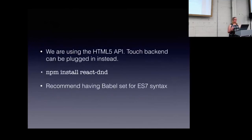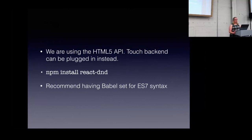For the example we're looking at, we're using the HTML5 API. You can implement a touch backend instead, as the HTML5 backend is for mouse users — it's one or the other unfortunately. You're going to install React DnD using npm install react-dnd. I found that it works as expected when you have your Babel plugin set for the ES7 decorator syntax. I started out writing it in ES6 and found it worked better with static prop types.